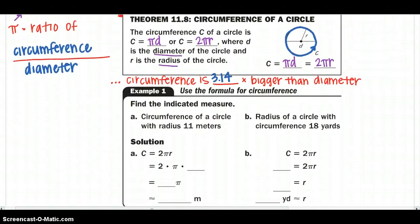So using one or the other of those equations, we want to find the indicated measure. So if you would like to draw a diagram, you may, but A tells us the circumference of a circle.